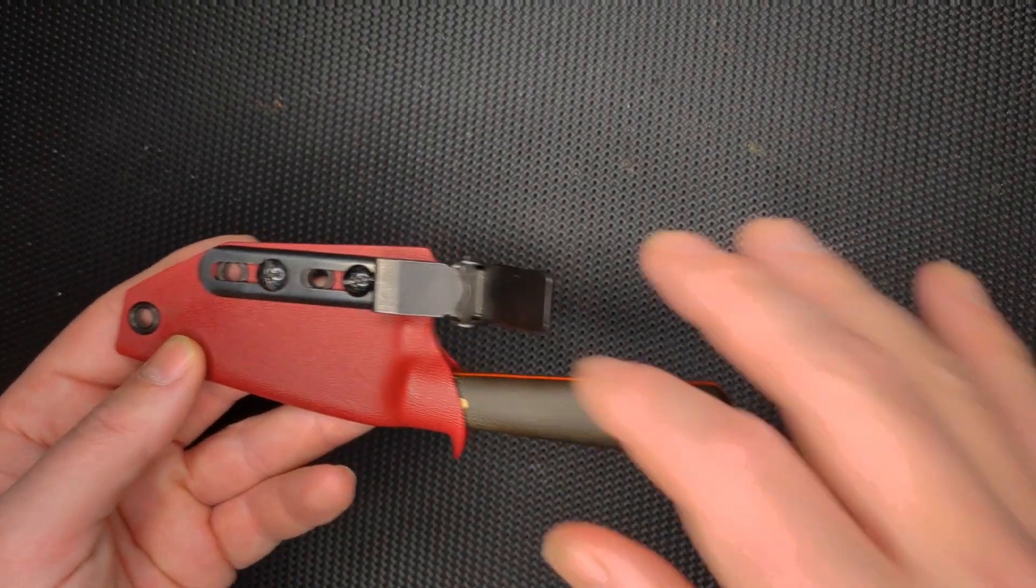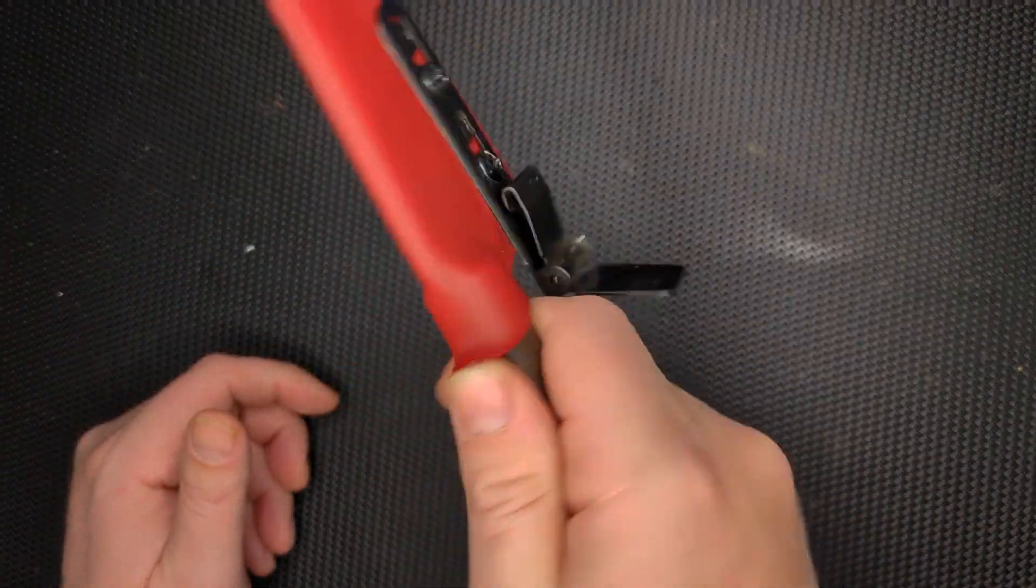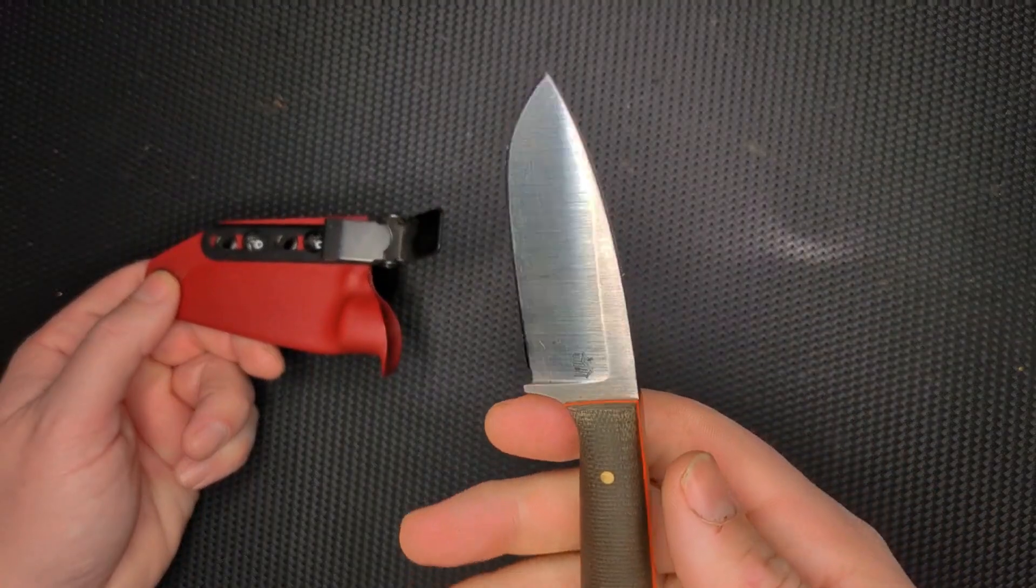You know, I wear Carhartts most of the time, and it has that pocket down on the right-hand side by your knee, and this just fits right in there, and it's so easy with this little thumb scallop to push out and use.